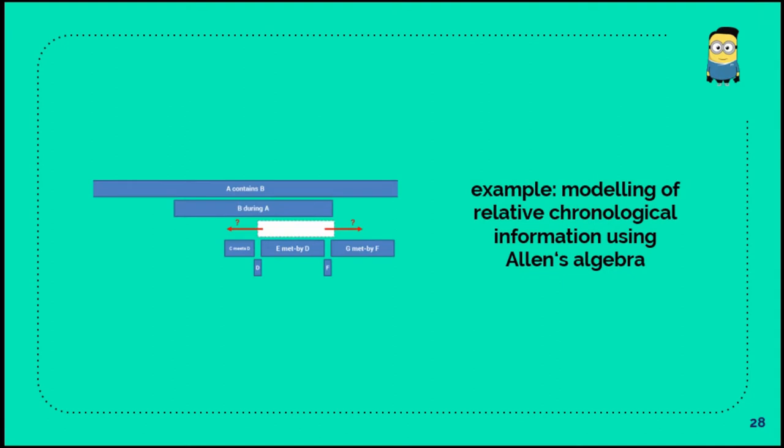For example, we want to model a relative chronological information using Allen's interval algebra. If you have some periods, they are relatively located to each other, and you have periods you don't really know where it fits in. Maybe there could be a tool that could help to solve this question.